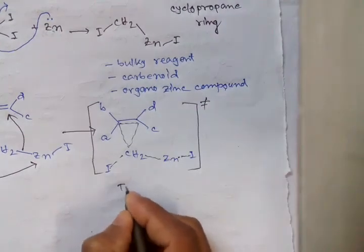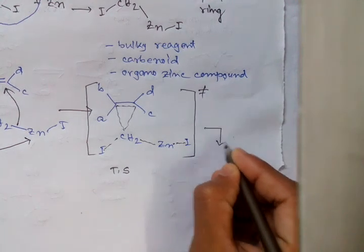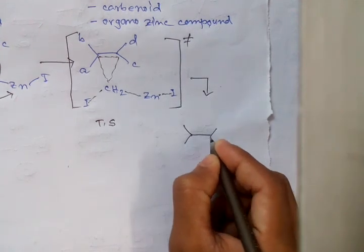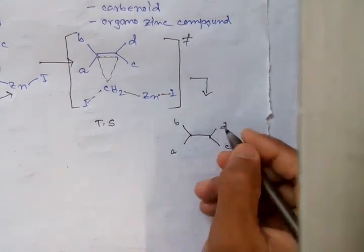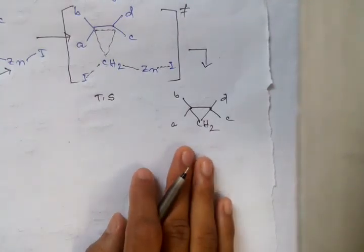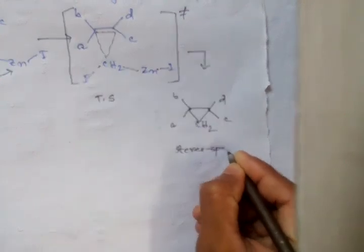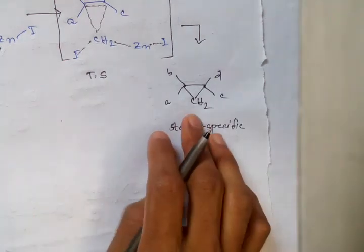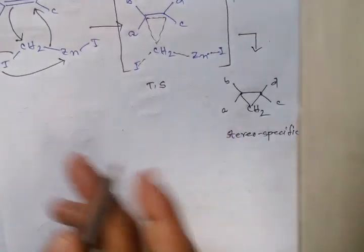From this transition state we get a product where a, b, c, d remain the same and there is addition of the CH₂ group. So it is a stereospecific reaction — a cis addition of this CH₂ group.